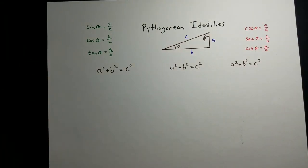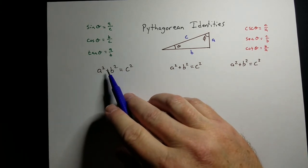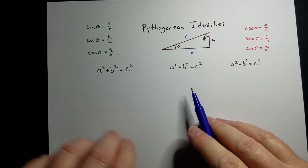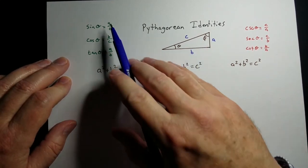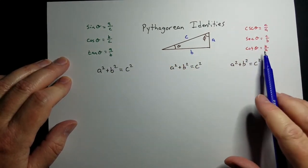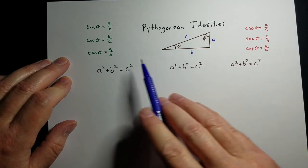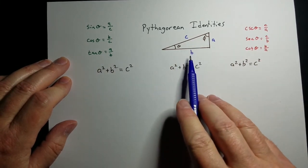The Pythagorean identities. If you've been inflicted with trigonometry, or now most people call it pre-cal, you've had to memorize a bunch of stuff. Unit circle and all kinds of things like that. But there's some things that you really don't have to memorize. You can figure out. And the Pythagorean identities is one of them. Everybody knows this one: A squared plus B squared equals C squared.